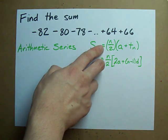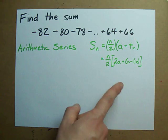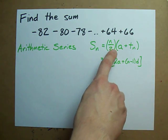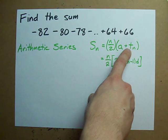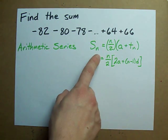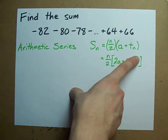Now there are two formulas for that, where s is the sum of the numbers in the series. You can use n over 2 times a plus tn, where this is the final term in your sum, or you can use n over 2 times 2a plus n minus 1 times d.